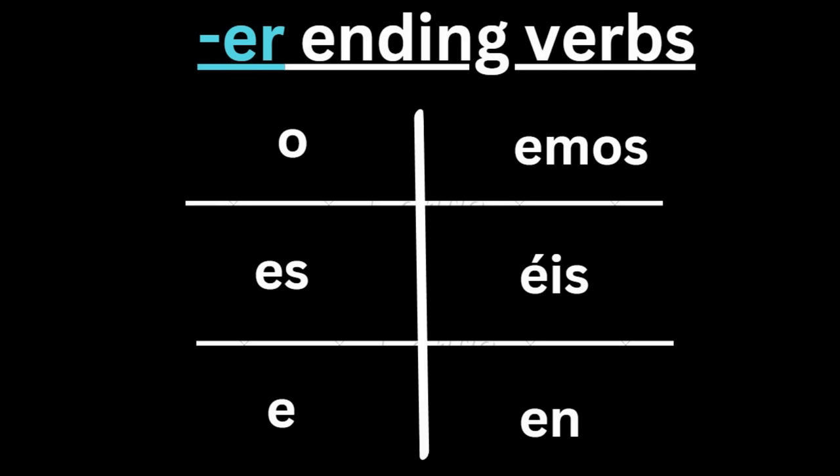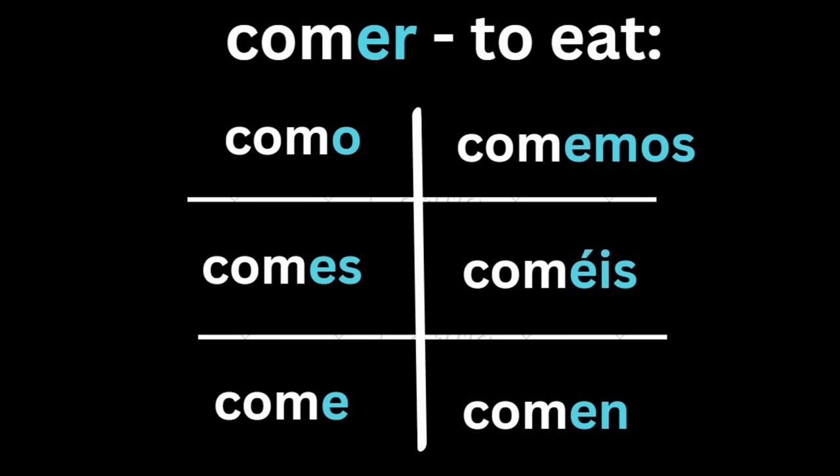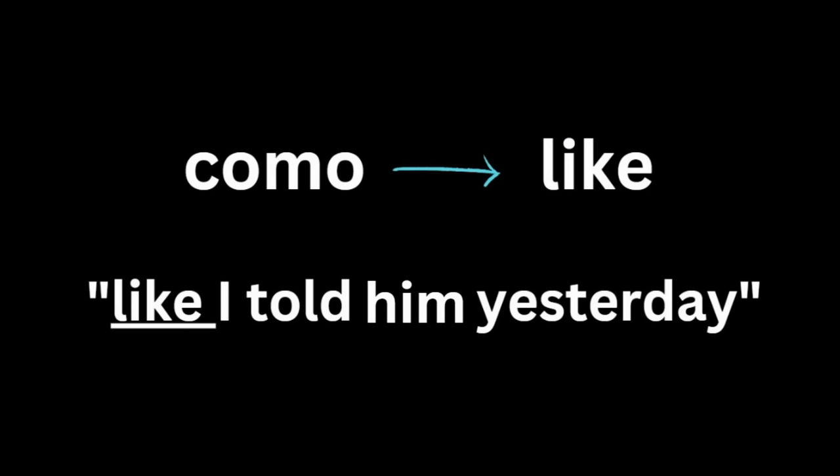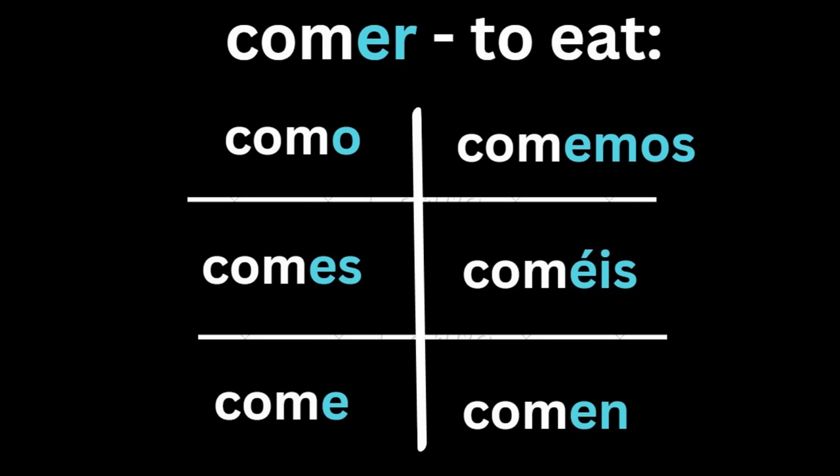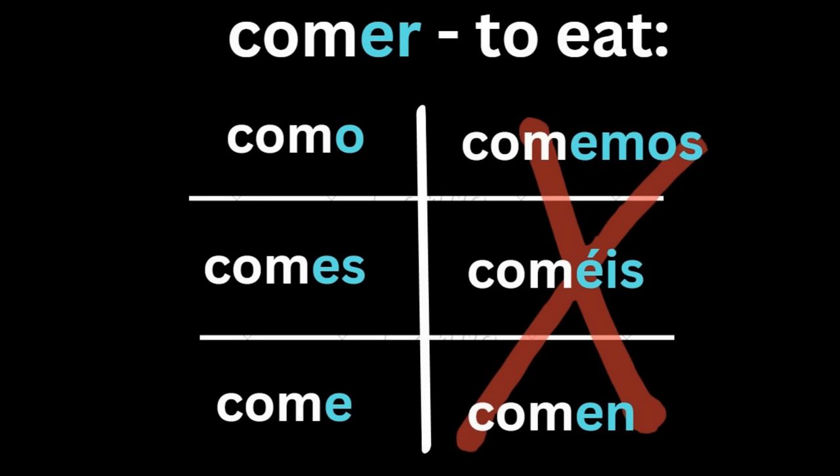For verbs ending in er, you drop the er ending and add: o for yo, es for tú, e for él/ella/usted, emos for nosotros, éis for vosotros, and en for ellos. Using comer as an example: yo como, tú comes, él come, nosotros comemos, vosotros coméis, ellos comen. Note that 'como' can also mean 'like' as in 'like I told him yesterday,' but the meaning changes in context. There is no need to conjugate every single er verb — you'll never use all of them.